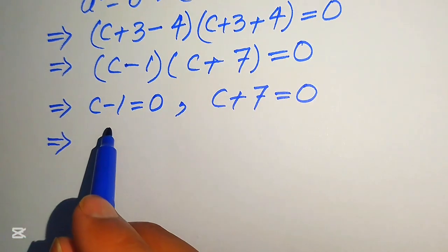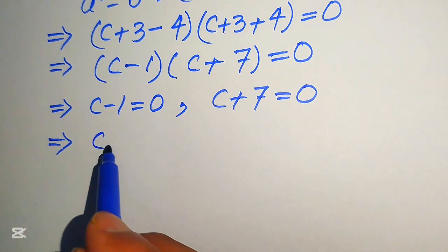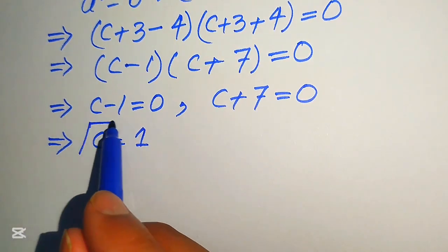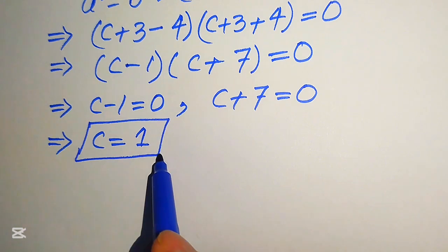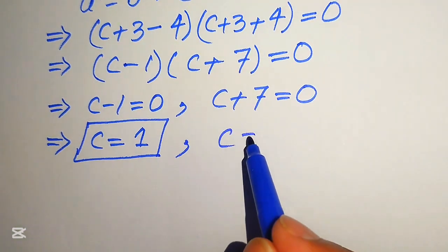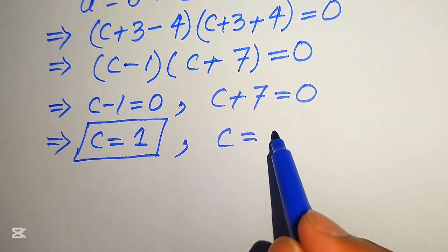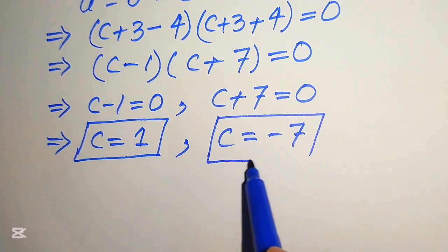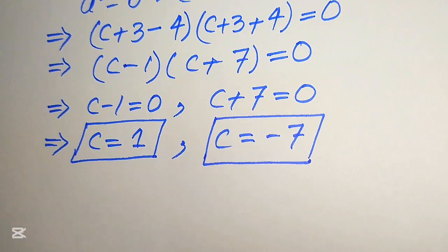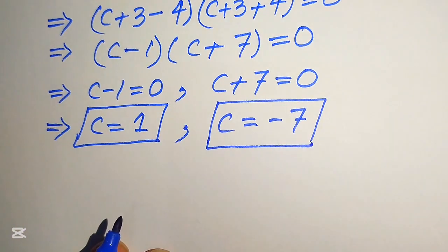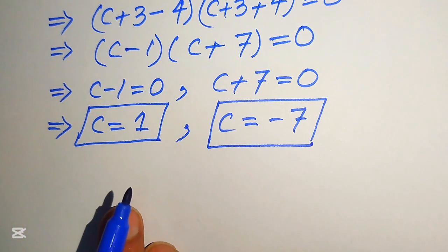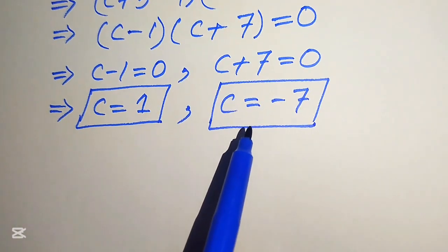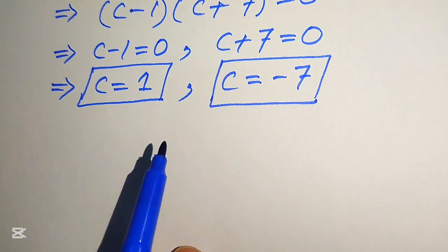From case one we move minus 1 to the right hand side and get c equals 1. From case two, plus 7 moves to give c equals minus 7. So in this problem we have two values of c: c equals 1 and c equals minus 7.